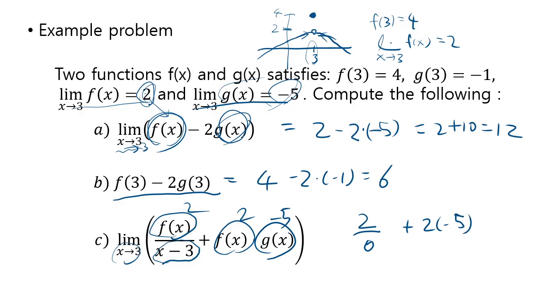That goes to positive infinity. So as limit x going to 3 plus of f of x over x minus 3, that's going to be 2 over 0 plus, dividing 2 by something that's very small but positive, that gives you positive infinity.